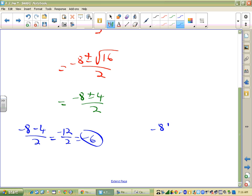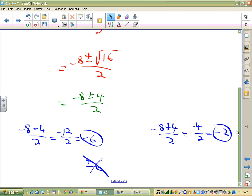And then we also have to take negative 8 plus 4 over 2. And a lot of people want to say, well, the answer is plus or minus 6. No, it's not like that. It doesn't work like that. So we get negative 4 over 2, which is negative 2.